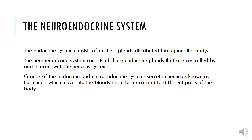The ductless glands of the body known as the endocrine system are present throughout the body, and the neuroendocrine system is based on those endocrine glands that are controlled by and interact with the nervous system. The glands of the endocrine and neuroendocrine system secrete chemicals known as hormones, and these hormones have a very major role in stress situations as well as in the stress response. These hormones are produced by the neuroendocrine systems and released into the bloodstream to be carried to different parts of the body, and that is how the body responds to stress.